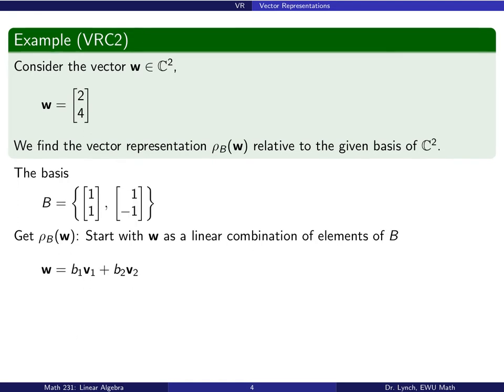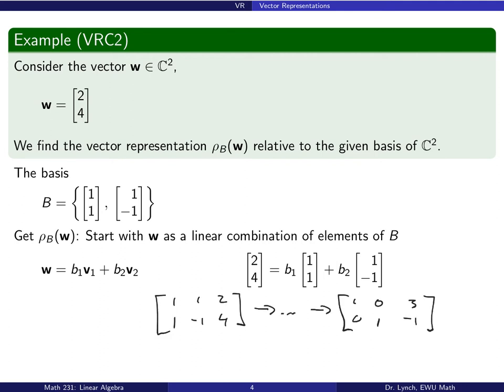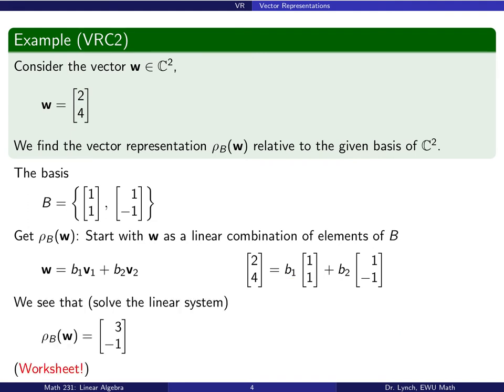Now the same vector w = (2, 4) but with a different basis: b = {(1,1), (1,−1)}. We write w as b₁v₁ + b₂v₂ and set up the corresponding linear system. Reducing the augmented matrix to reduced row echelon form, we find b₁ = 3 and b₂ = −1. Picking off those coefficients gives the vector representation of w relative to b: ρ_b(w) = (3, −1)ᵀ.